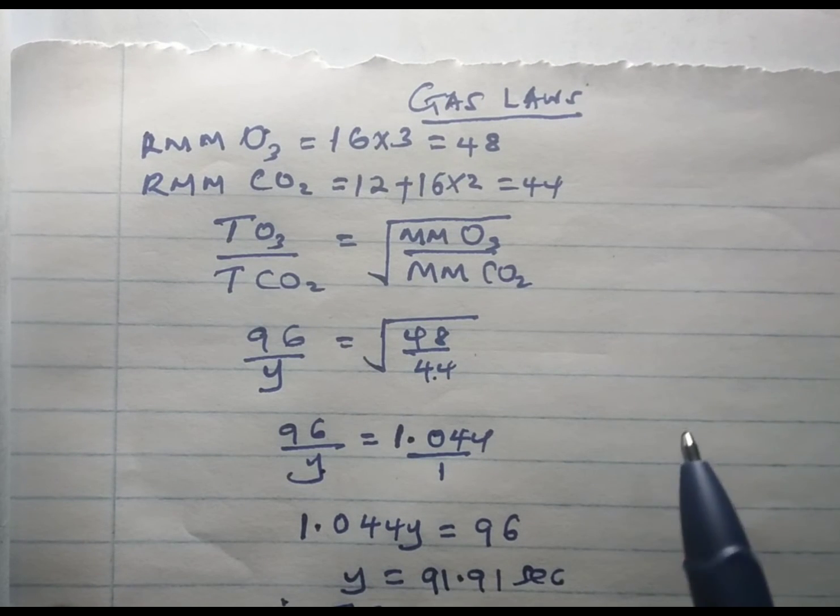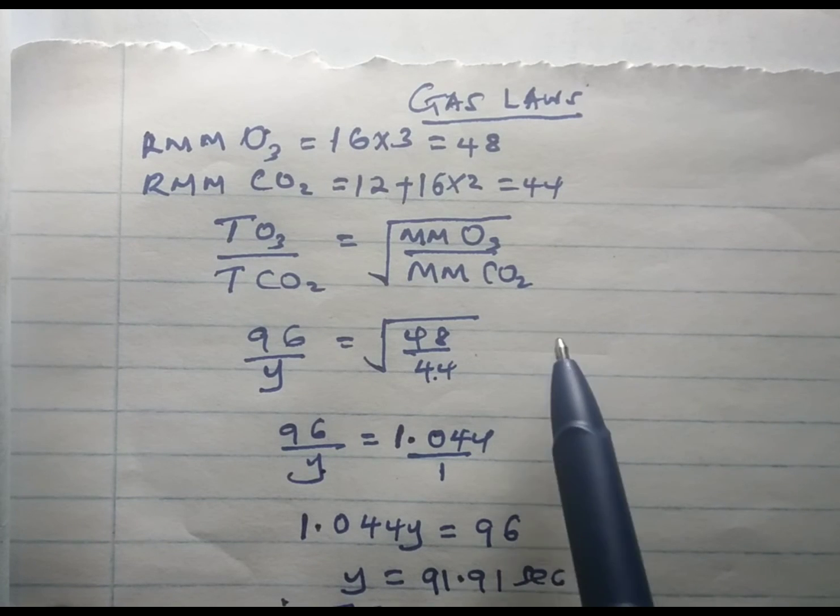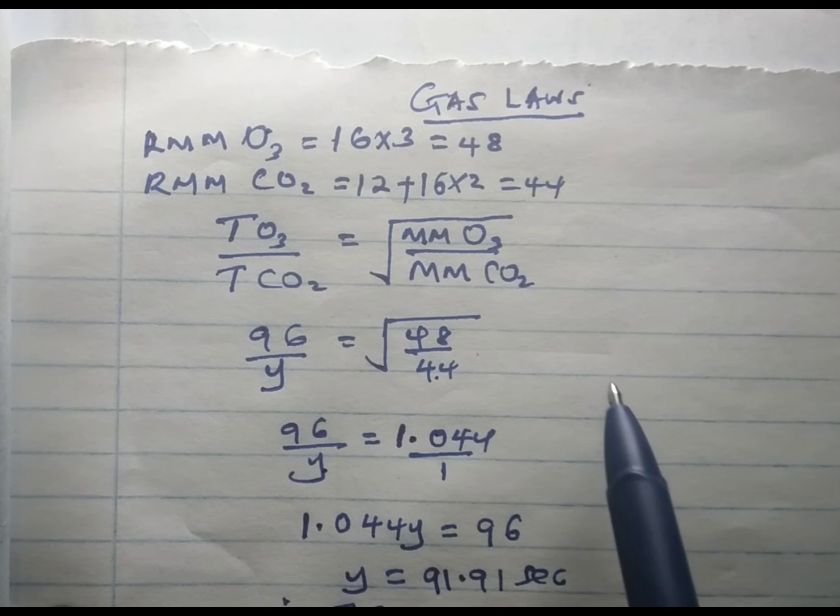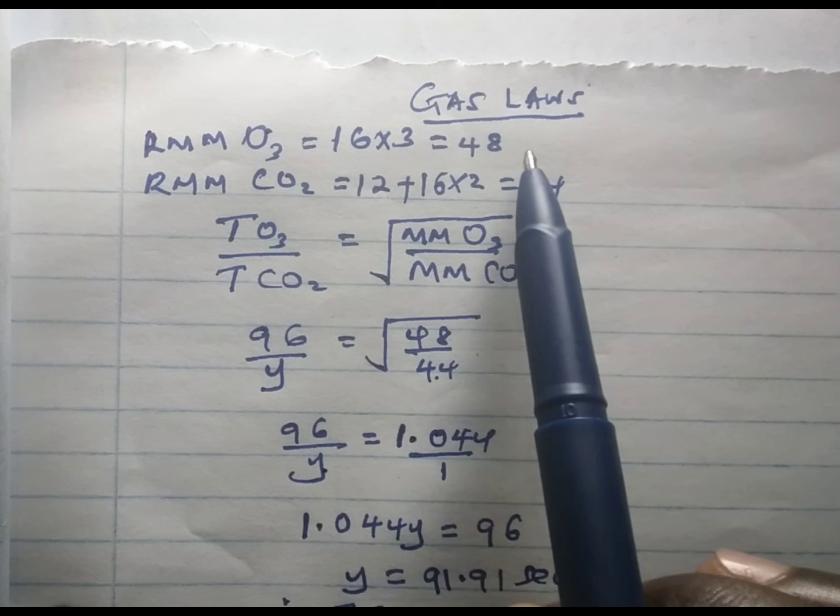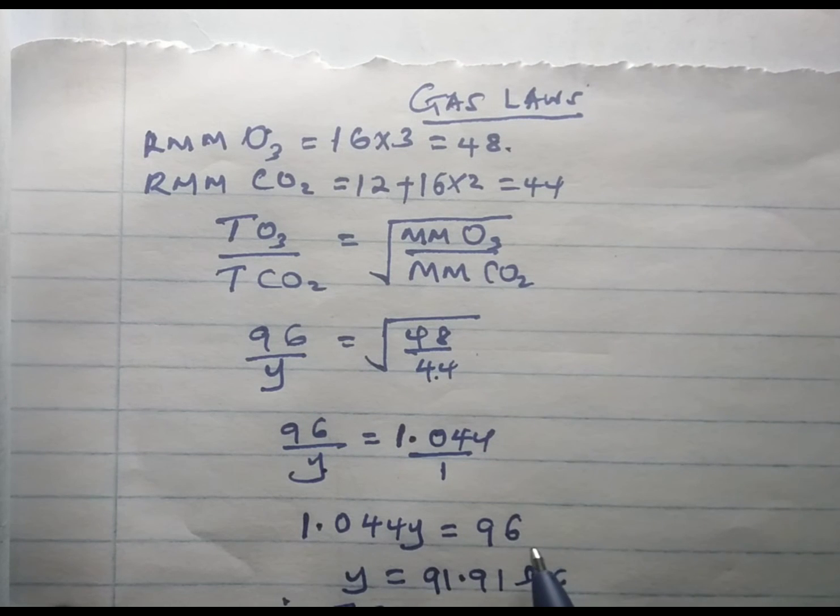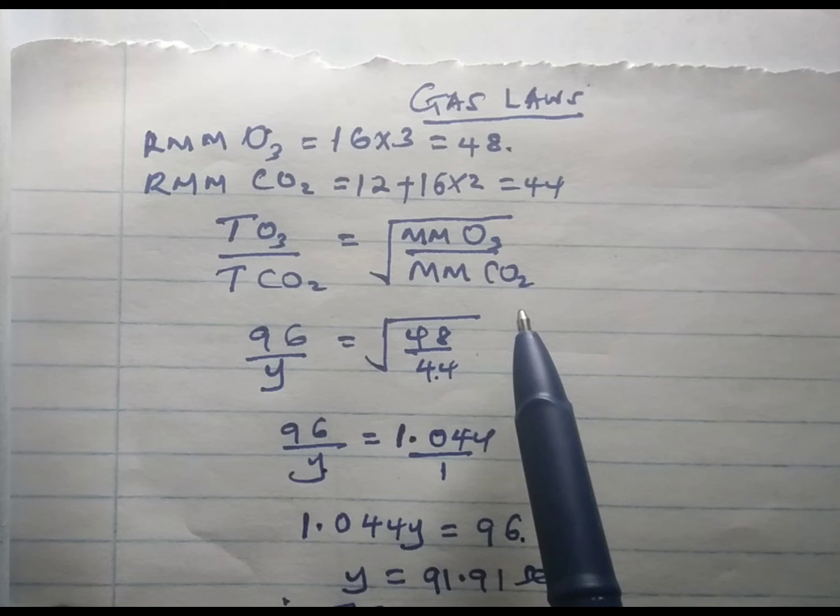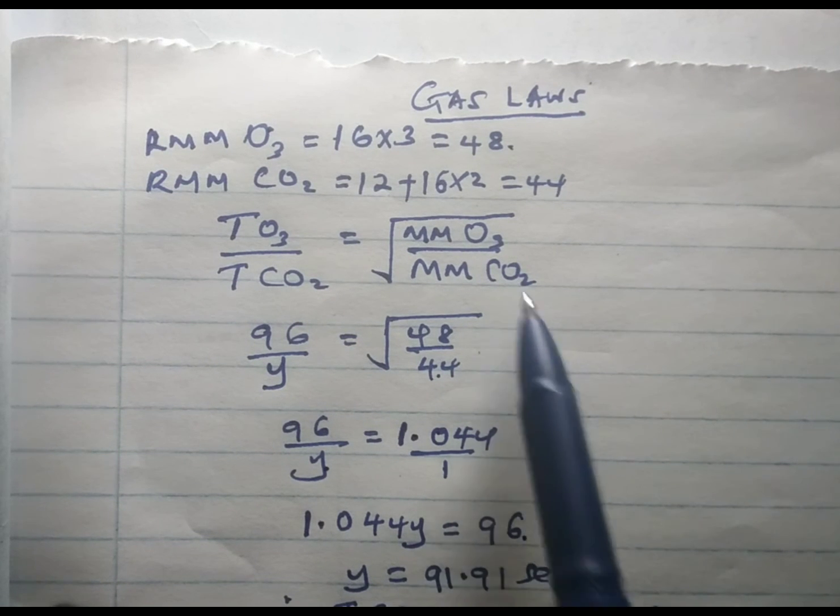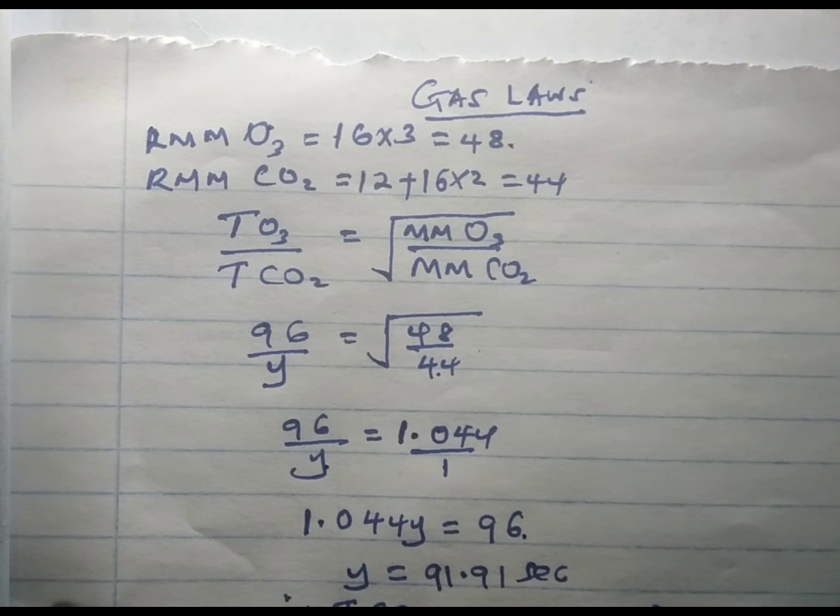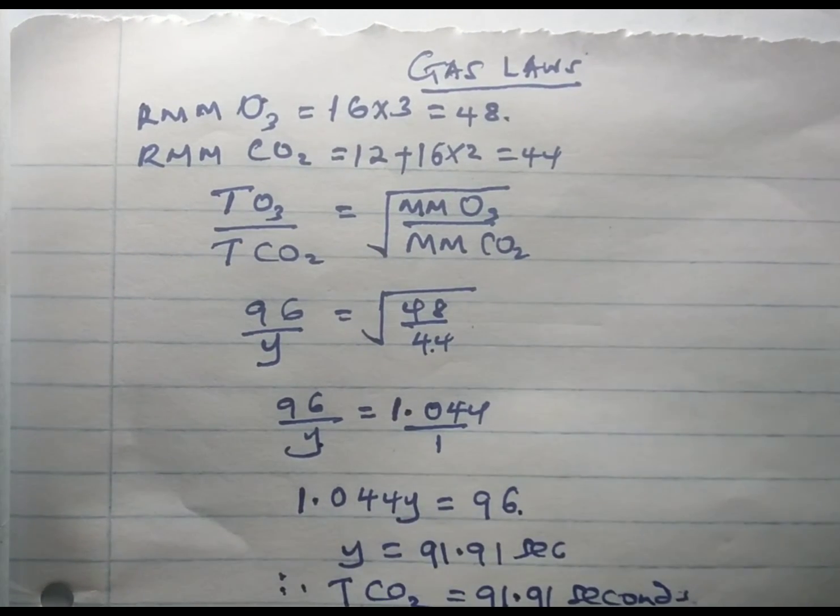And this is very true because when you look at the densities of the two gases, you realize ozone with a molecular mass of 48 is going to take 96 seconds, while carbon dioxide whose molecular mass is 44 will take less time for it to move across the media.